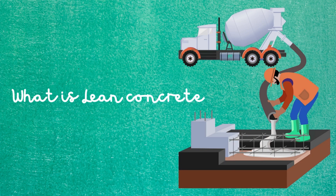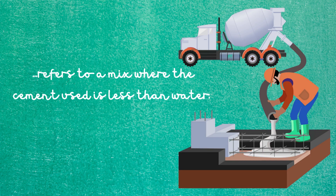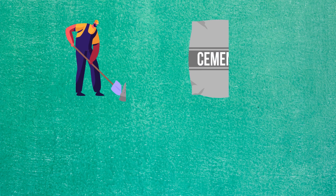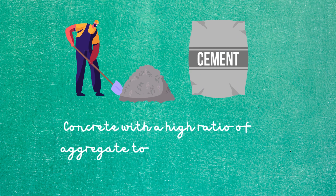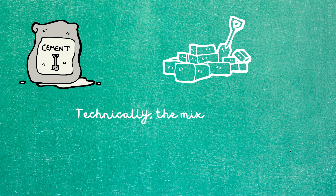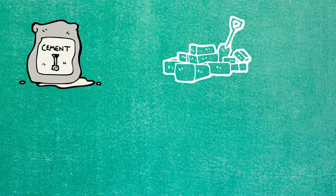So, what's lean concrete? A lean concrete refers to a mix where the cement used is less than water. Concrete with a high ratio of aggregate to cement is called lean concrete. Technically, the mix is called lean concrete mix if its cement content falls below 10%.